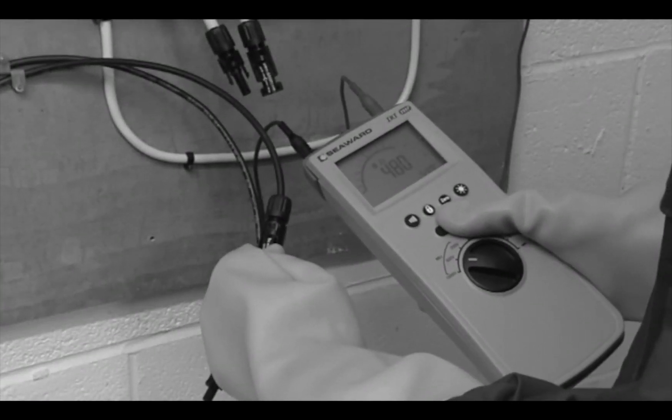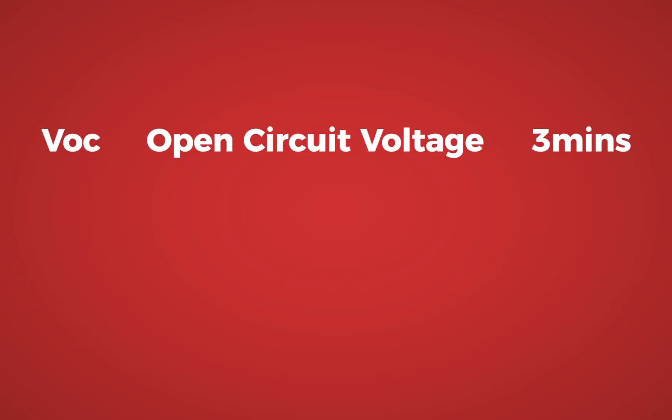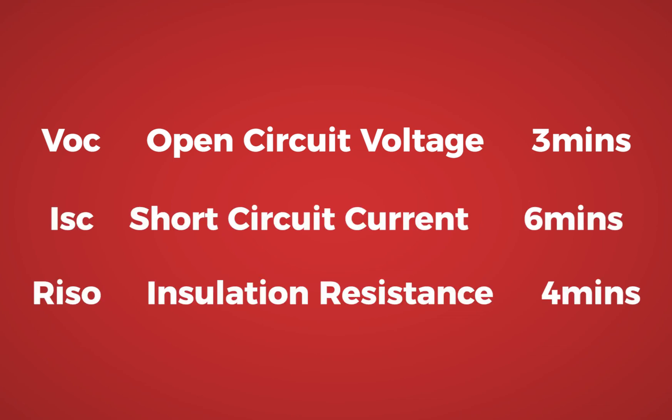So with the traditional test method using a multi-function tester and clamp meter, the open circuit voltage, short circuit current, and the insulation resistance tests take around 13 minutes.